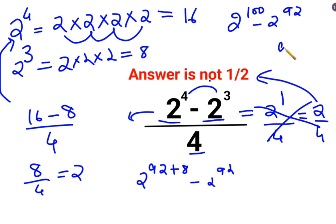And in indices we know a raised to m plus n can be written as a raised to m multiplied by a raised to n. So here also we can write this as 2 raised to 92 multiplied by 2 raised to 8 minus 2 raised to 92.